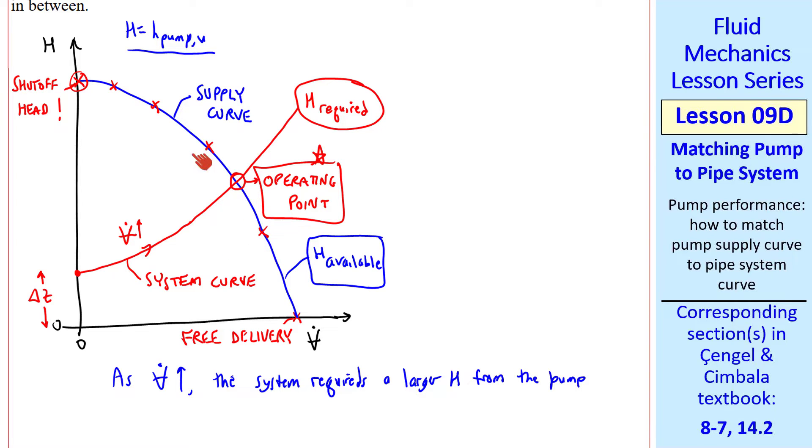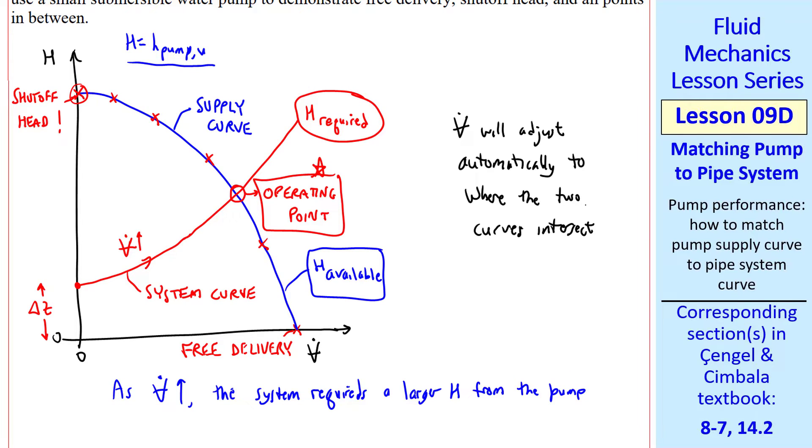You can also call this curve H required and you can call the blue curve H available. Regardless of what you call it, the flow will adjust itself so that it operates at this operating point. V dot will adjust automatically to where the two curves intersect, which is the operating point.